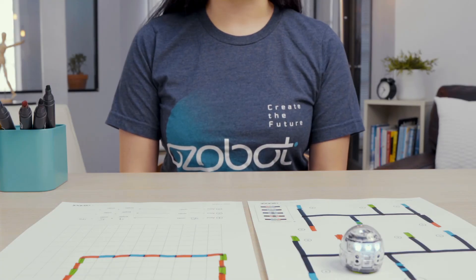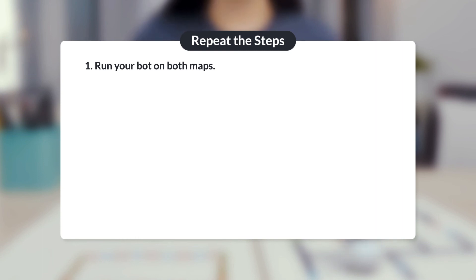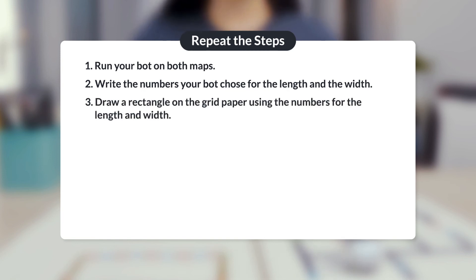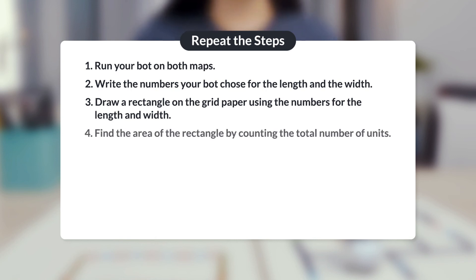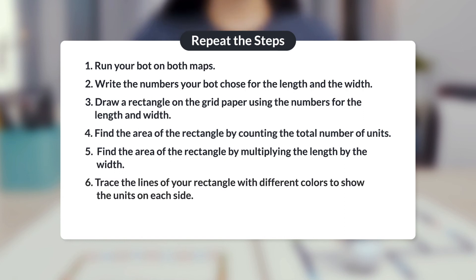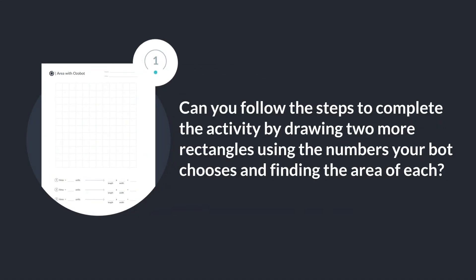Now that you know how to complete the activity, you will repeat the following steps to draw and find the area of two more rectangles. One: run your bot on both maps. Two: write the numbers your bot chose for the length and the width. Three: draw a rectangle on the grid paper using the numbers for length and width. Four: find the area of the rectangle by counting the total number of units. Five: find the area of the rectangle by multiplying the length by the width. Six: trace the lines of your rectangle with different colors to show the units on each side. Seven: run your bot on your rectangle. Can you follow the steps to complete the activity by drawing two more rectangles using the numbers your bot chooses and finding the area of each?